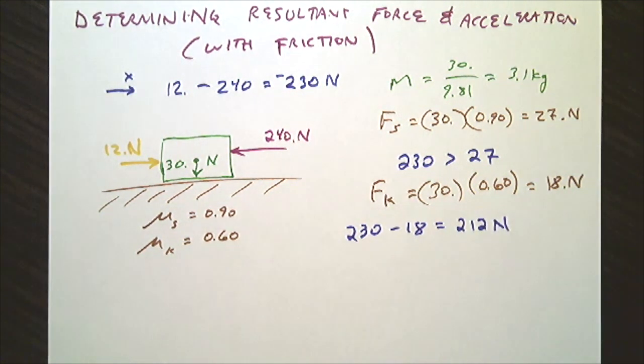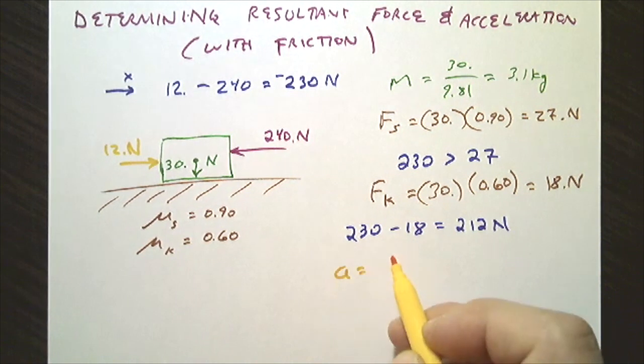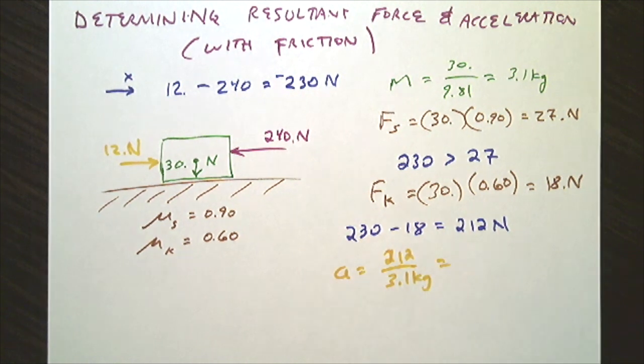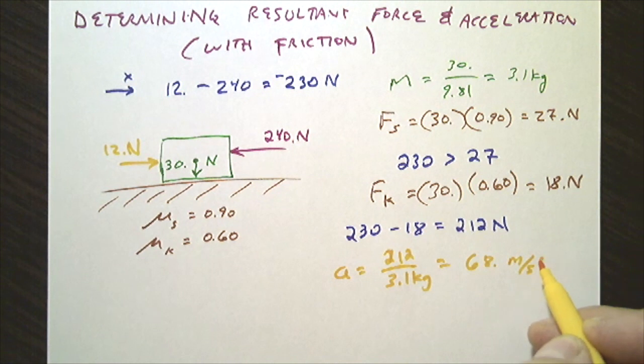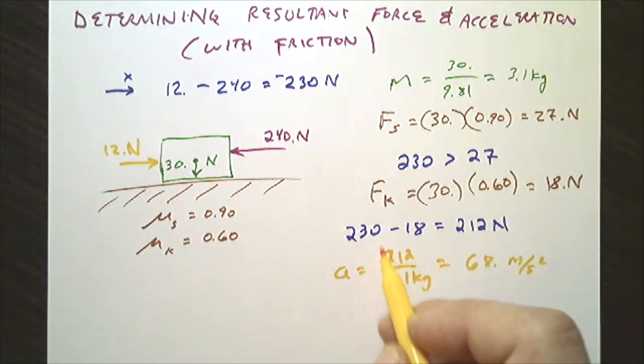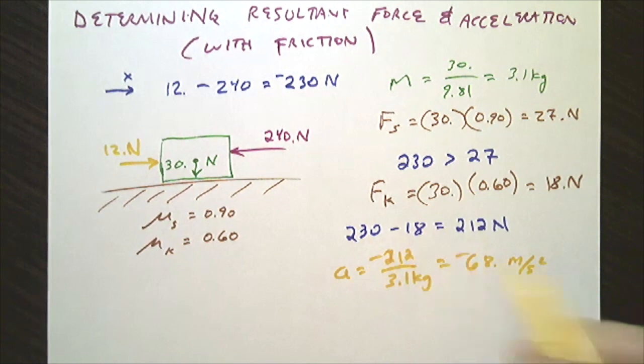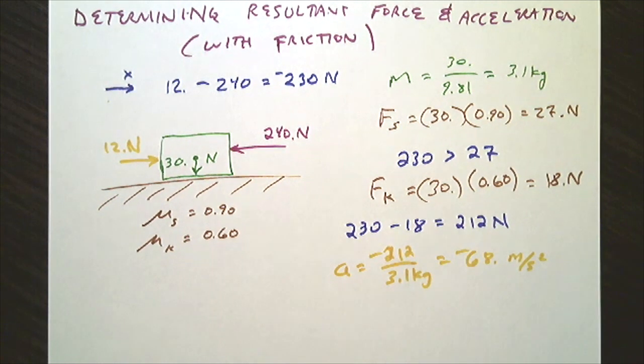The acceleration due to this force would be that force divided by the mass of the object, 3.1 kg, and that would give me 68 meters per second squared, to the left. So this resultant force is negative, negative according to my axes.